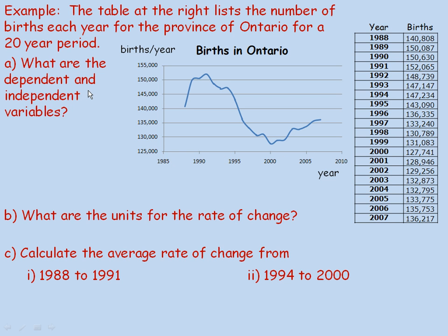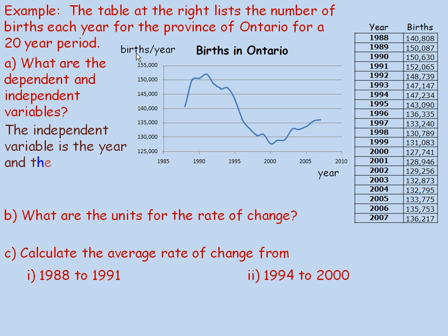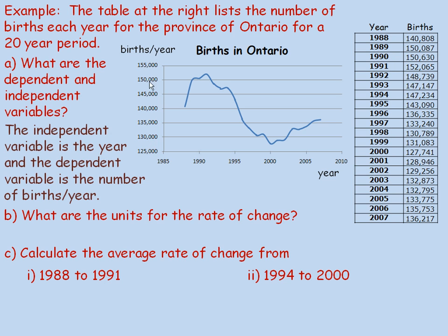In part A, we're asked what are the dependent and independent variables. When you draw a graph, the independent variable is always on the horizontal axis, so that would be the number of the year. The dependent variable is on the vertical axis — the number of births per year depends on the year. So the independent variable is the year, and the dependent variable is the number of births per year.